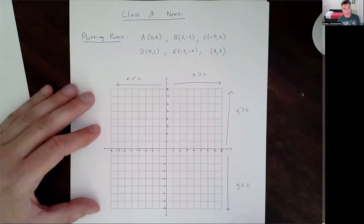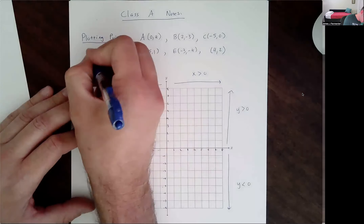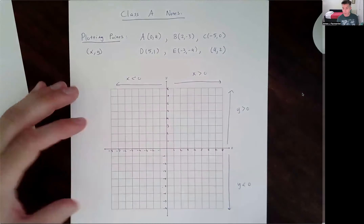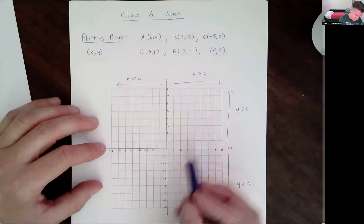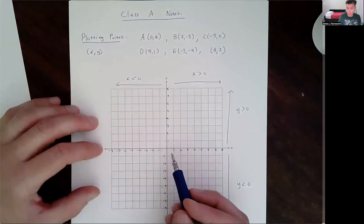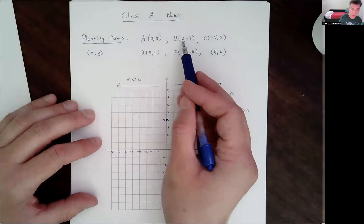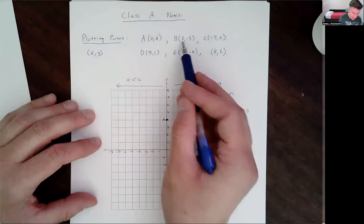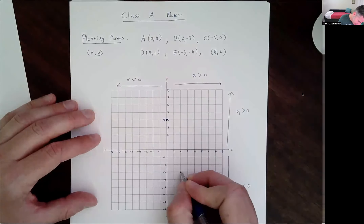So if I want to plot the point (0, 4), it's always important to remember that points are written as the x-coordinate first, the y-coordinate second — they're alphabetical, x comes before y. So when I plot (0, 4), I'm going to go 0 in the x direction, which means I don't move left or right. I'm going to go 4 in the y direction. And I'm going to label it A. For point B, I'm going to go 2 in the x direction — 2 to the right — negative 3 in the y direction — 3 down. So 2 right, 3 down — that's point B.